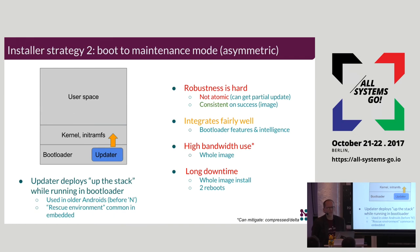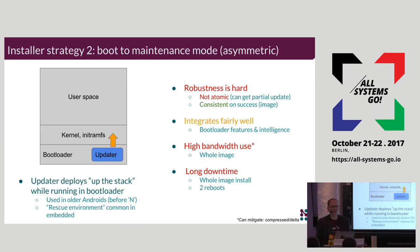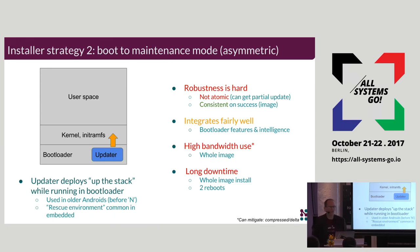Another strategy is booting into a maintenance mode, where you have a small root file system that boots and handles updates. The biggest issue is the long downtime — your system has to reboot into maintenance mode, which does the update, then reboots back into system mode. There could be extra reboots if there are failures in sanity checks after booting the update, requiring reinstall of the original and rollback. Bandwidth is fairly high because you are downloading an entire image, although delta updates can help minimize that.